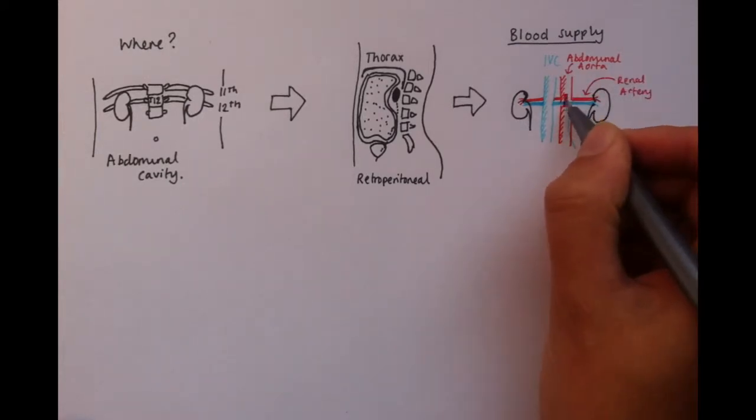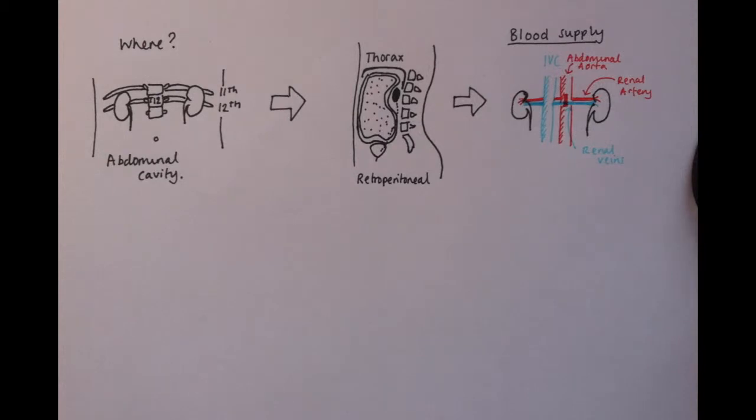As the left renal vein crosses the aorta, it sits just inferior to the superior mesenteric artery, which can compress the vein if it becomes engorged. This is sometimes called nutcracker syndrome. Bizarrely, this can cause testicular pain in men, as the left testicular vein drains into the left renal vein before joining the inferior vena cava, a remnant of their embryological positioning.